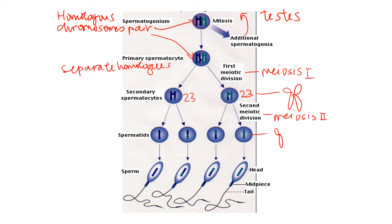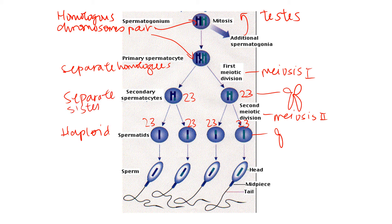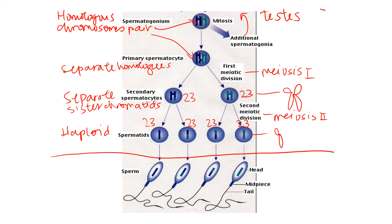We are not going to reduce the chromosome count any further. Each one of these resulting cells is going to have 23 chromosomes. So these resulting spermatids are haploid. When we divide those secondary spermatocytes, this time we're separating the sister chromatids — taking a double-stranded chromosome that looks like an X and separating it into single-stranded, unreplicated chromosomes. We have now finished the process of spermatogenesis.